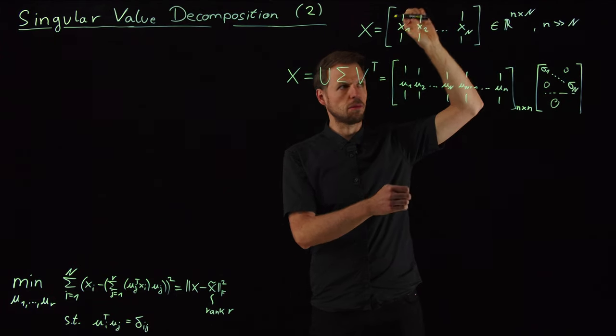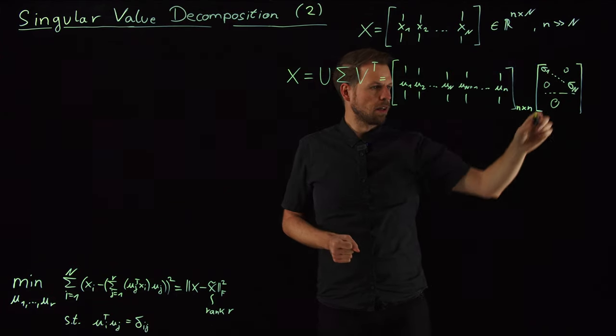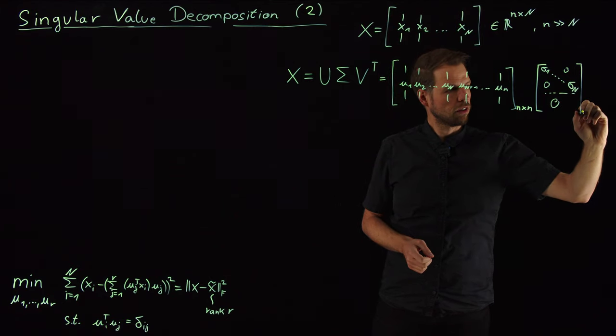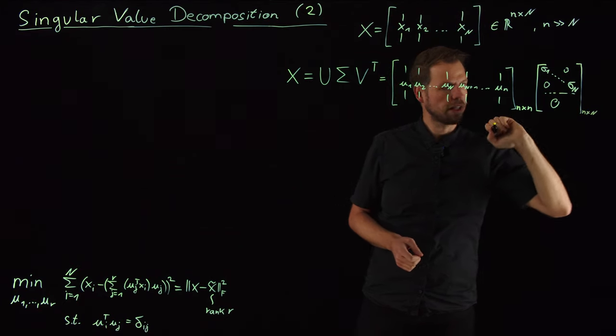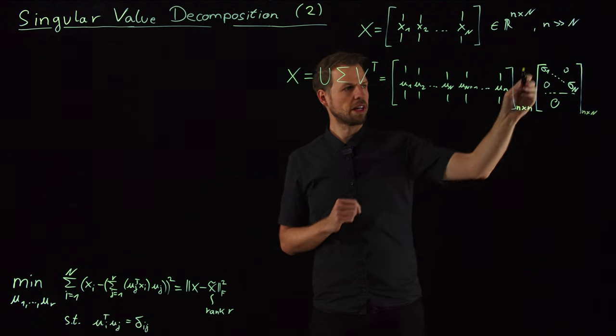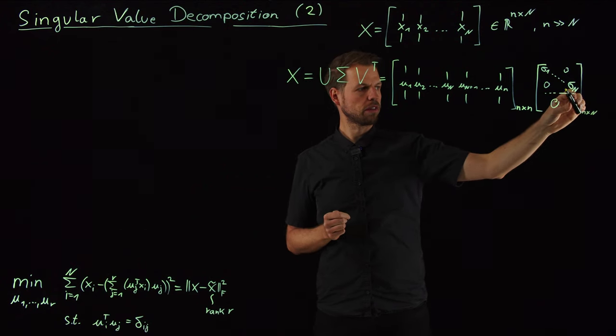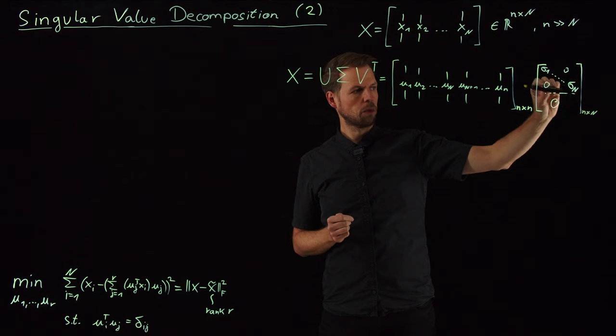this is a matrix of n by big N. And so, since we only have on the diagonal entries in this matrix, everything below the diagonal will be zero.